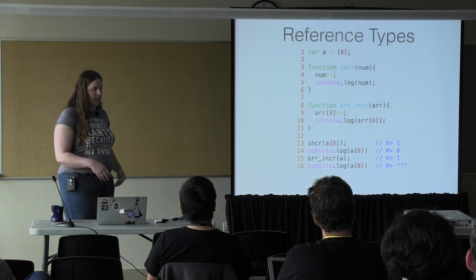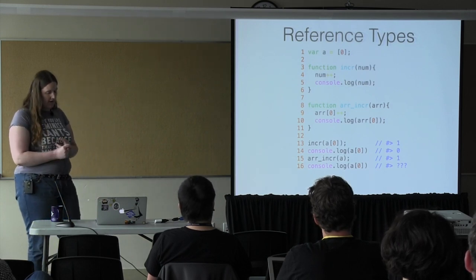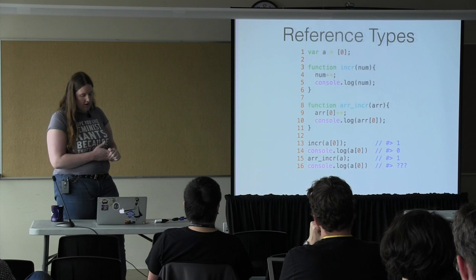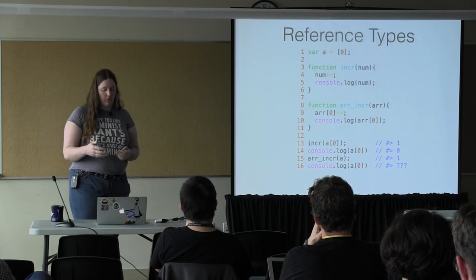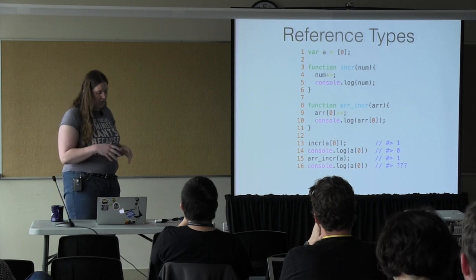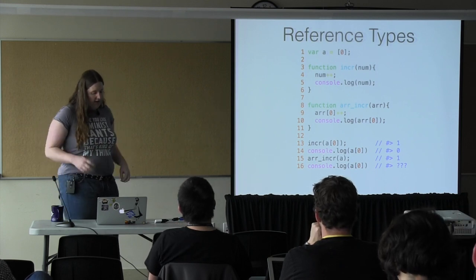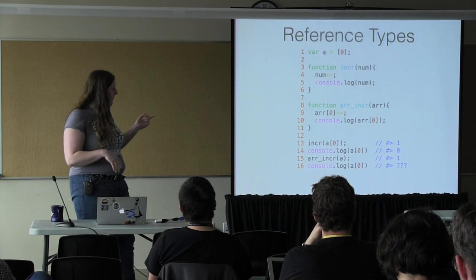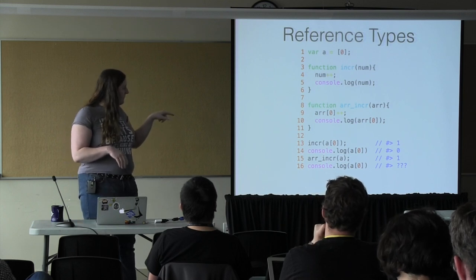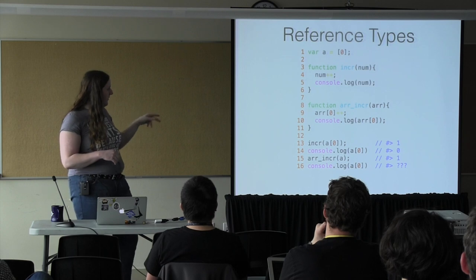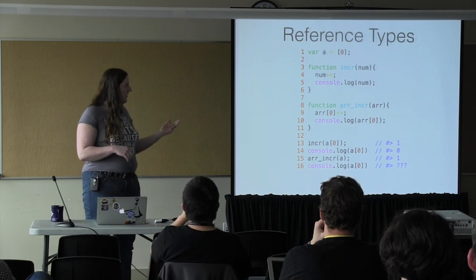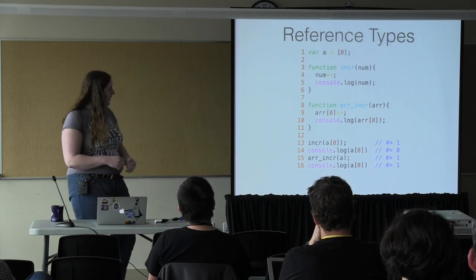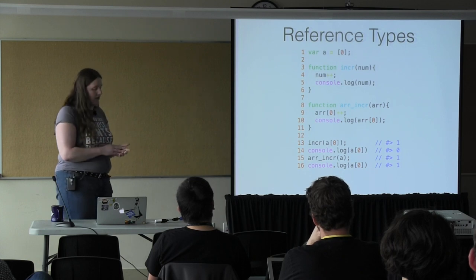Reference types are things like arrays and objects, which are kind of like dictionaries or lists in most other languages. When you pass them into a function, a reference to the actual object is passed in, so you are modifying the actual object. If you increment the value of the array, as done in lines 13 and 14, you have the same issue with value types. However, when you increment directly with the array, it actually does increment what was set outside of the function.